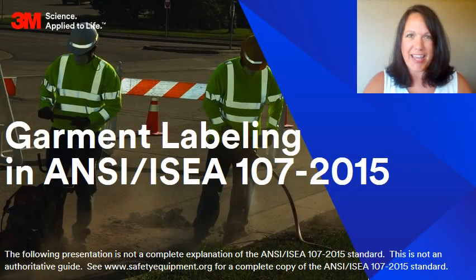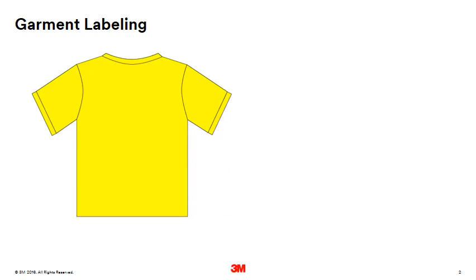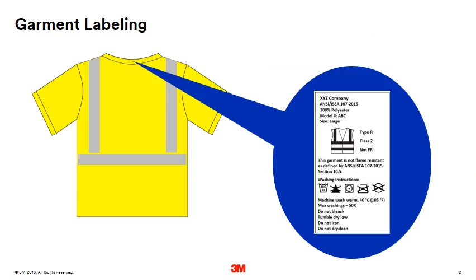Hi, I'm Katie Aune and I work in technical service for the Scotchlight brand reflective material business. Today's topic is garment labeling. It is important to have the correct amounts of compliant background material and retroreflective on a garment, but did you know having the correct labeling is equally important? The information on the label clearly relates important information to you, the end user, so you can make sure it's the right garment for you and your crew. Let's go over some label examples.